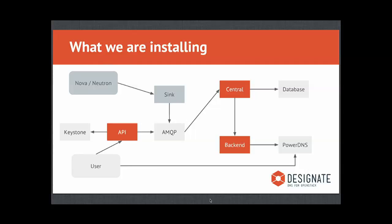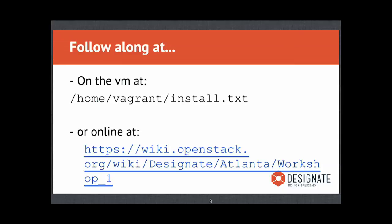For today we're going to be using PowerDNS. The VM you have has a few things already installed to help us move along quickly — we have Nova, Neutron, and Keystone installed, and we'll do a little bit of configuration of some of those as we go. If you are on the VM right now, you should be in home vagrant. If you do an ls, you should see one of the files there is install.txt. That file contains the commands we're going to be using and some of the instructions.